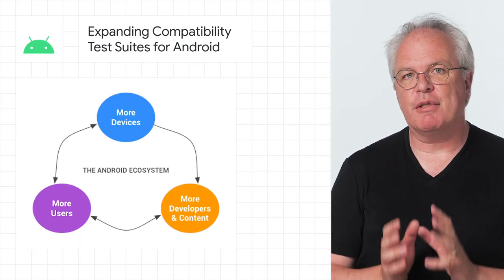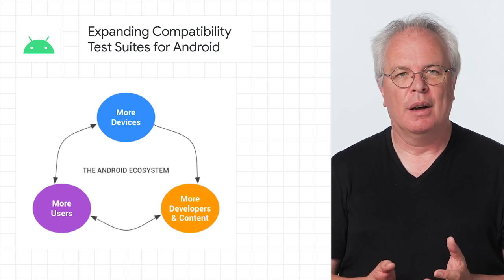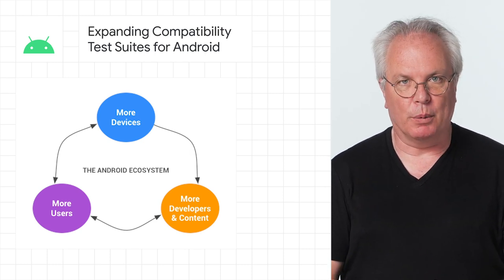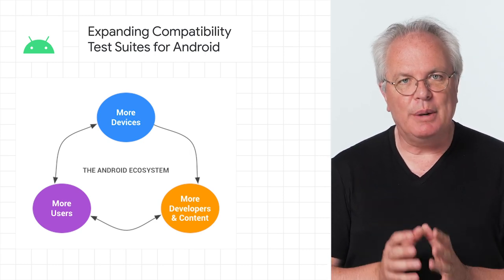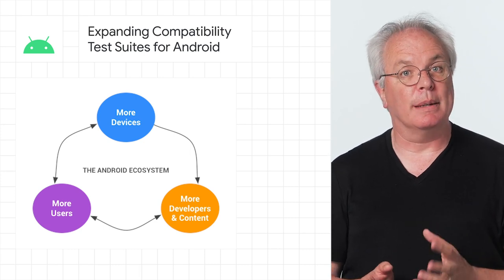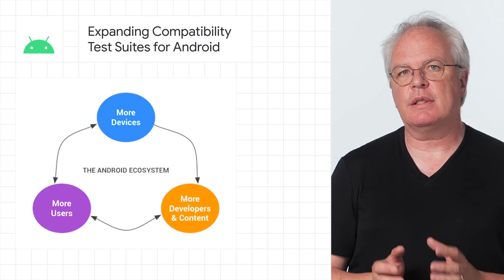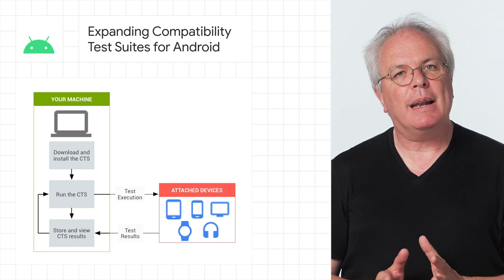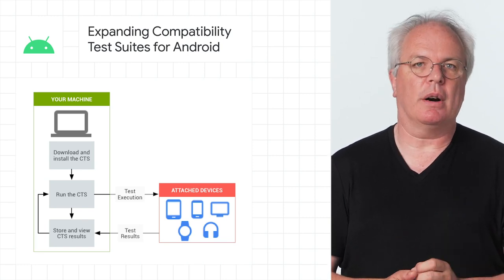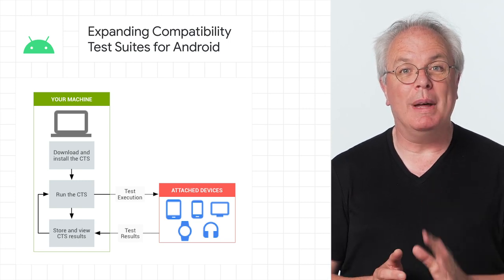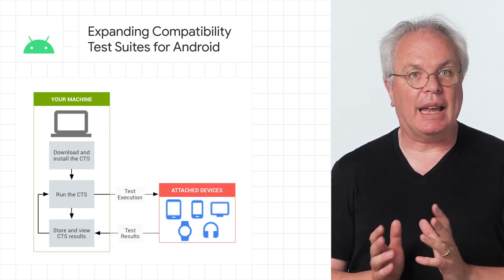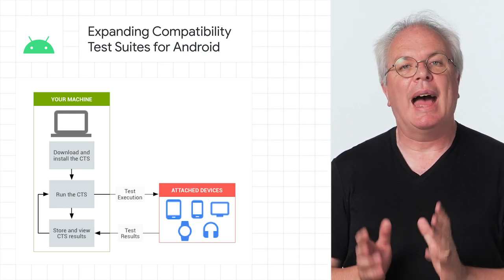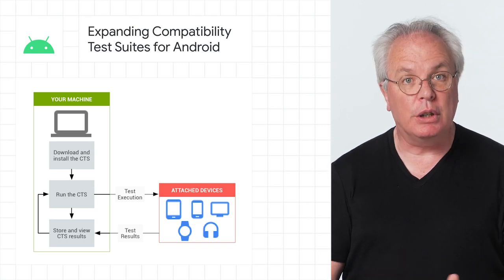A strength of Android is its diverse ecosystem of devices, brought to market by more than 24,000 distinct devices and used by billions of people around the world. Since the early releases of Android, we've invested in our Android compatibility program as a way to ensure that devices continue to provide a stable, consistent environment for your apps. The Compatibility Test Suite, or CTS, is a key part of the program. It's a collection of more than 2 million test cases that check Android device implementations to ensure developer applications run on a variety of devices and enable a consistent application experience for users.